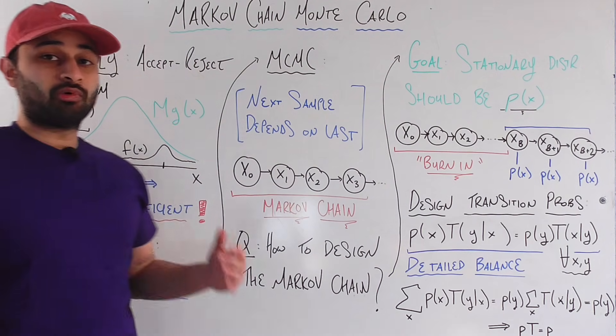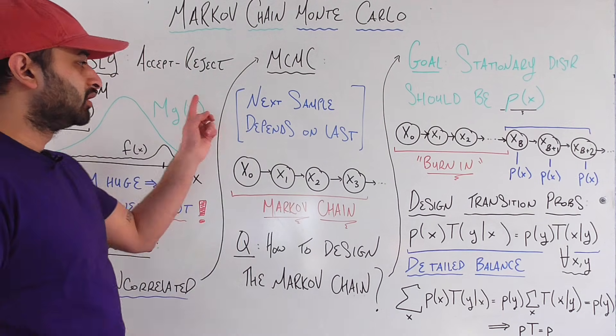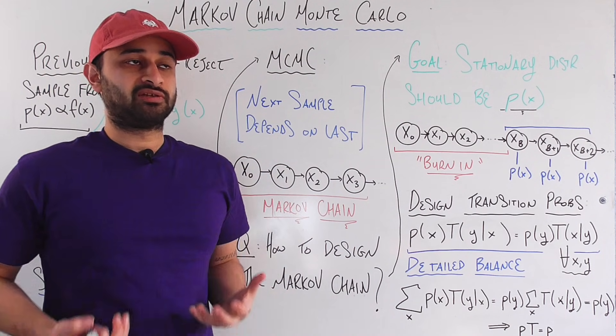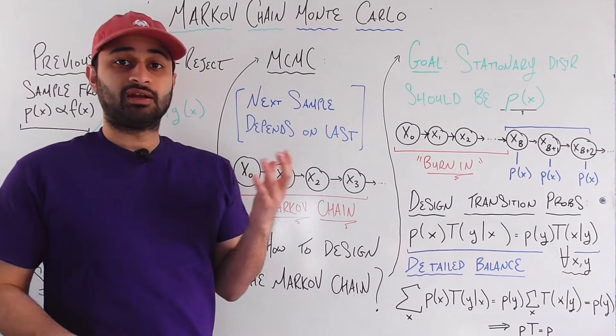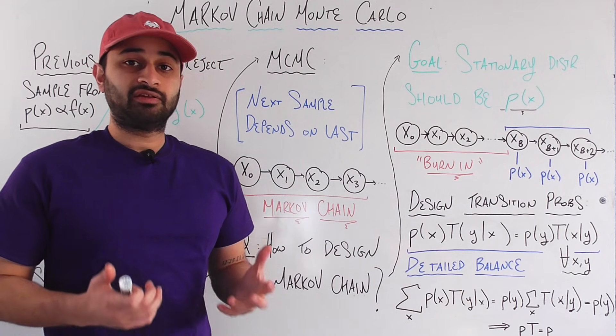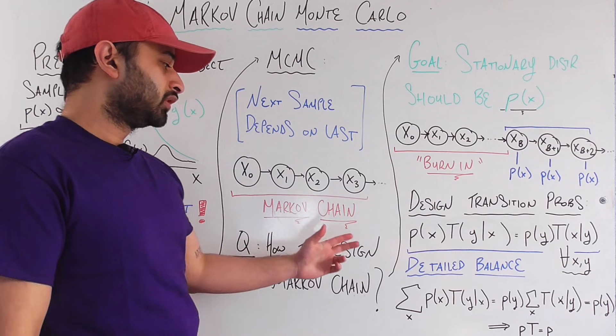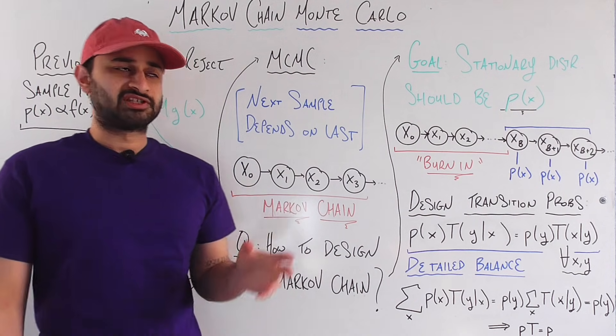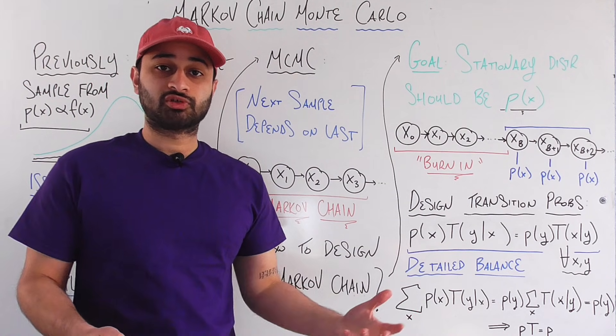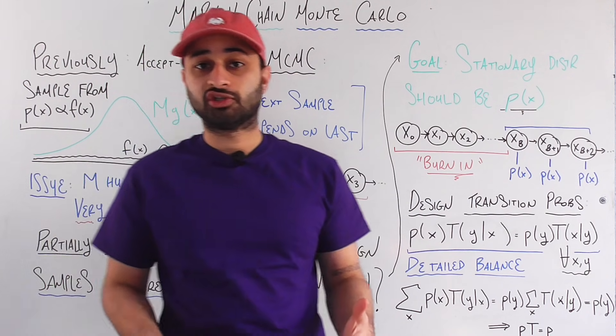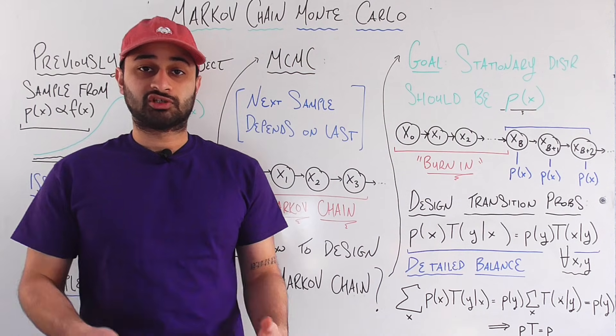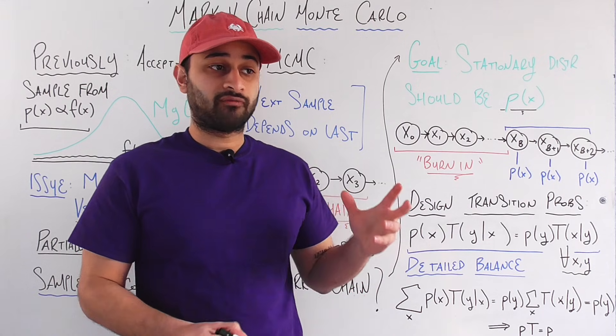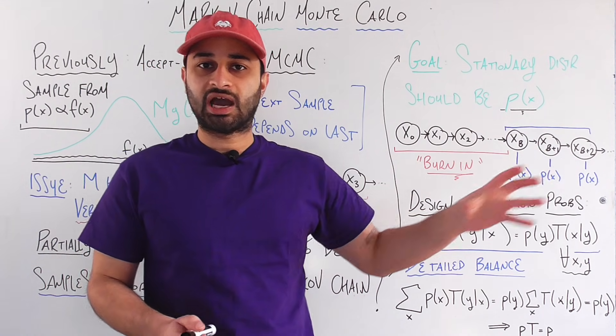So MCMC in a nutshell, what it adds to this accept-reject sampling is it says that the next sample depends on the last sample. Where have we seen this philosophy before, where the next thing depends on the state of the previous thing? That is exactly the driving principle of a Markov chain. So that's where the first MC comes in, Markov chain, and the Monte Carlo, the second MC, comes in because we are simulating samples, we are simulating draws from our target distribution P of X by simulating this Markov chain. So we just let this Markov chain run forward and eventually this Markov chain is going to simulate draws from P of X. So let's see how we get there.